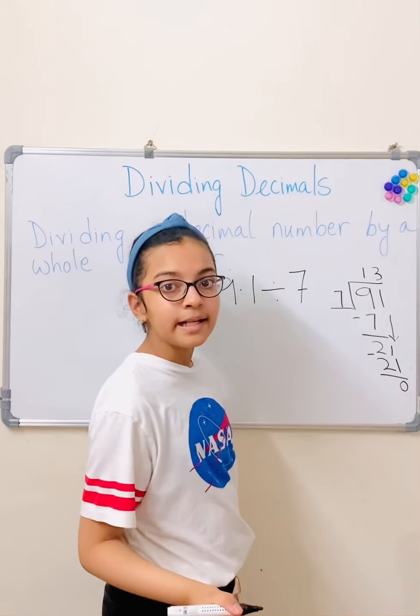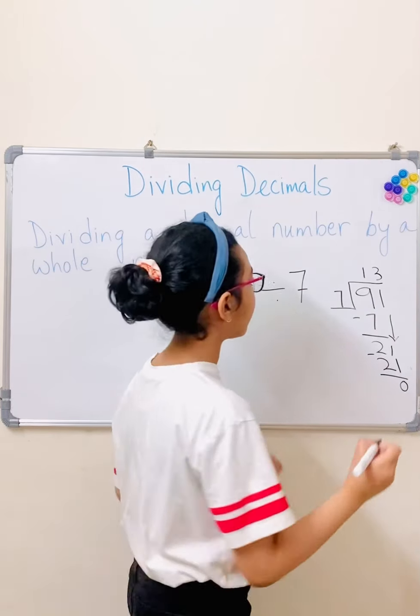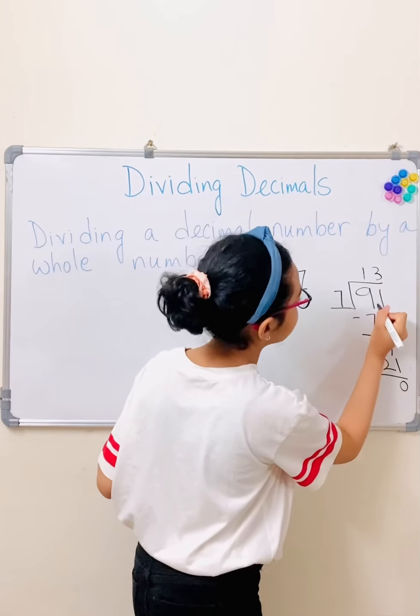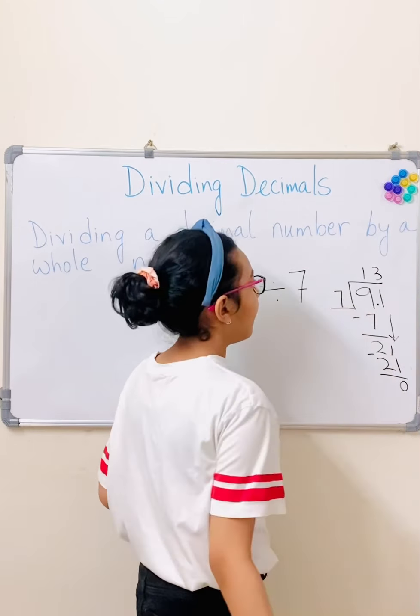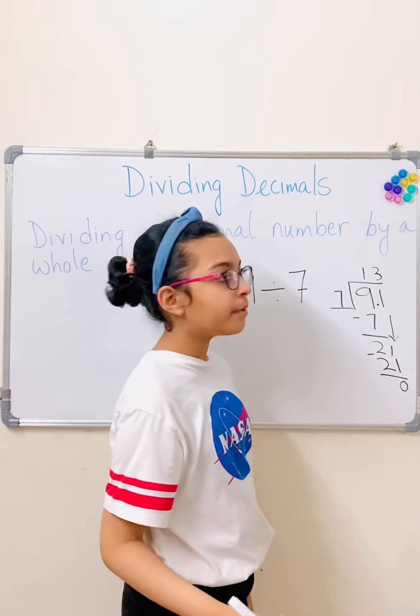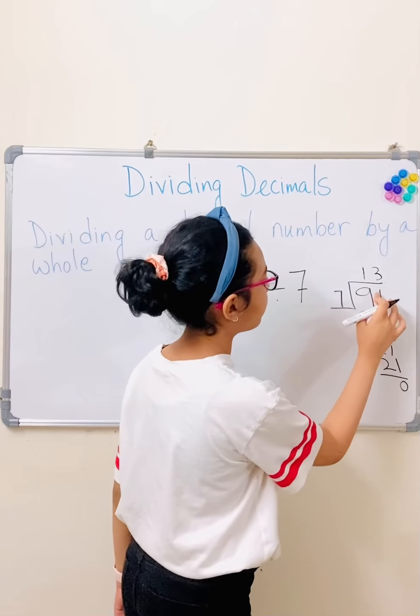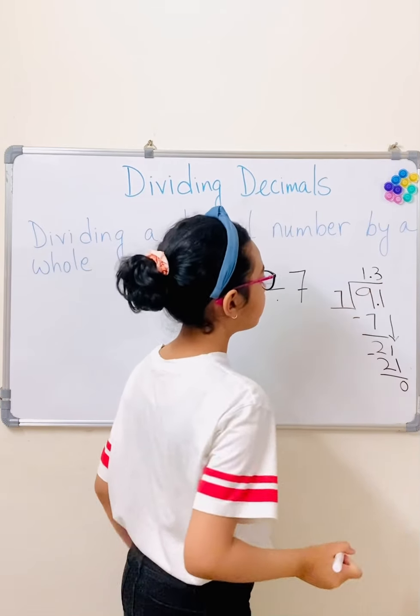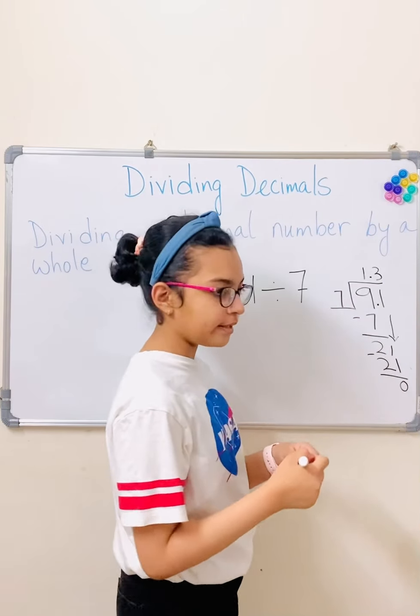And 7 times 3 is 21. But we need to add the decimal point now. So it was actually 9.1. So there. And in our answer, the decimal point will be right above the one in our dividend. So it's 1.3, not 13.